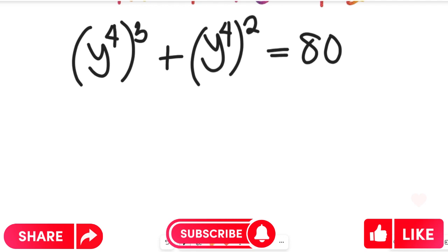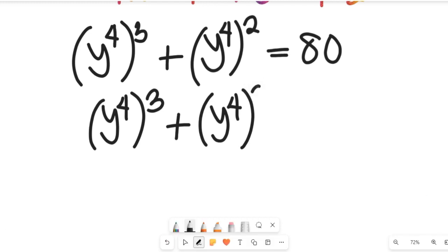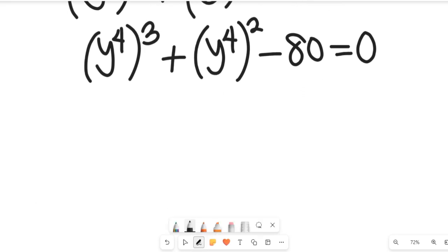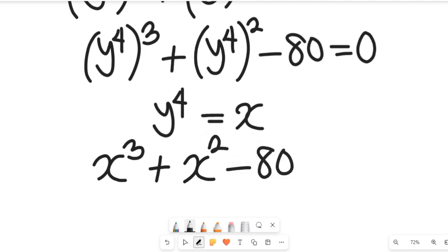If you look at that expression you're going to see a unique value. Now let's subtract 80 from both sides. We'll have y to the power of 4, all to the power of 3, plus y to the power of 4, all to the power of 2, minus 80, equal to 0. Now let y to the power of 4 equal x. Wherever we see y to the power of 4 we replace it with x, giving us x³ + x² − 80 = 0.